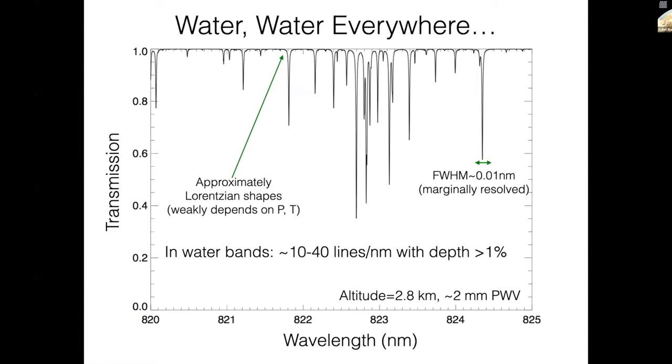Here's just a zoom in of absorption by Earth's atmosphere around 8023 nanometers. These are water absorption features, a spectrum you would get for some typical astronomical observatory, maybe three kilometers altitude. The water lines themselves have a width of about 0.01 nanometer. So that means for your average EPRV spectrometer, they're marginally resolved, which can be helpful and also could be a problem.